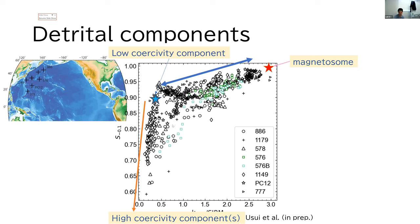But terrigenous components may have similar ARM susceptibility. And they may, multiple components may plot on this line. So from this data alone, I cannot say,